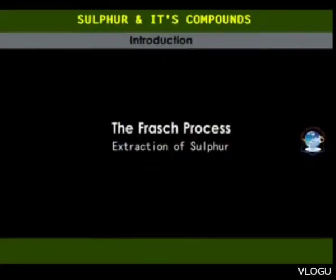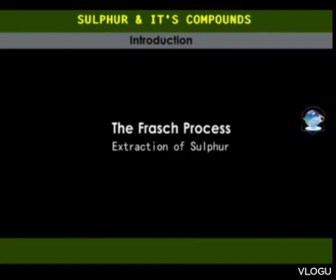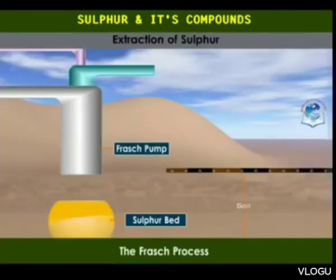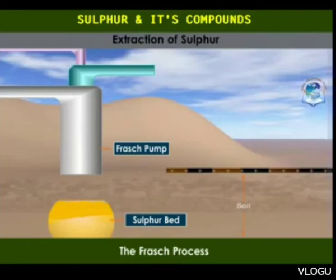The Frasch process. The sulfur beds lie beneath layers of clay, sand and limestone, which makes open mining impossible due to the risk of collapse.